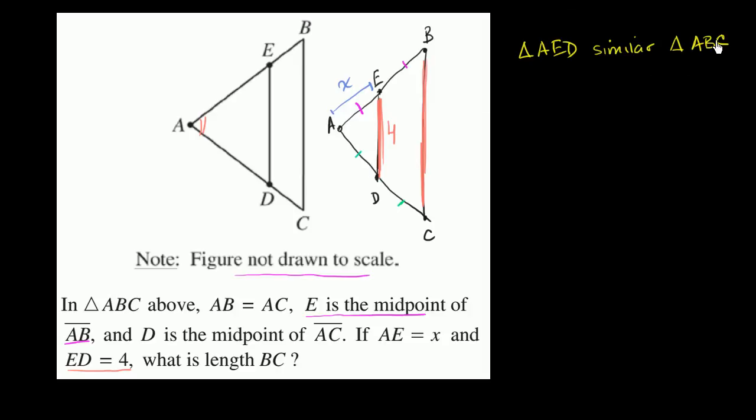Now what's the ratio between corresponding sides of ABC and AED? Well, this length is X. This length we know is 2X. How do we know that? Because E is the midpoint. So the ratio between corresponding sides of the larger triangle and the smaller triangle is 2X to X, or the ratio is just 2.